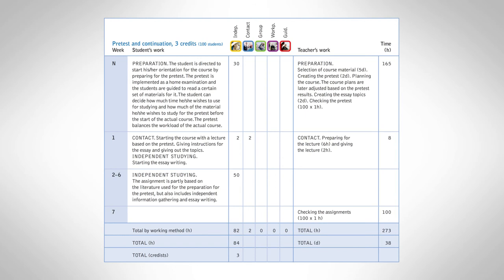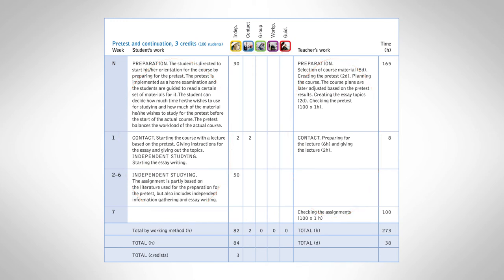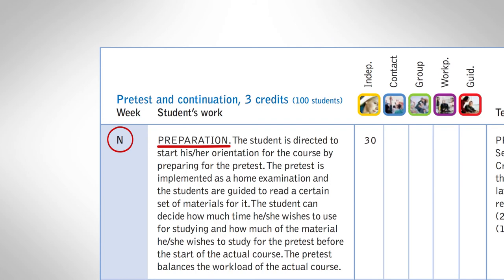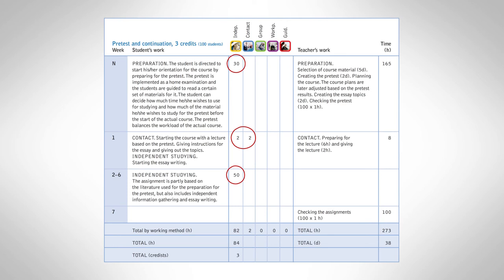The teacher's handbook also includes a useful tool for the practical planning of the coursework. Here's how it works. Describe the learning tasks of the students and your own teaching tasks on a weekly basis. You can keep the writing short, but remember to account for all the different working methods used each week. Don't forget to plan the work to be done before the actual teaching period starts. Also, make an estimate of the time the students will need to complete their tasks. The estimate should specify the time needed for the different working methods on a weekly basis.